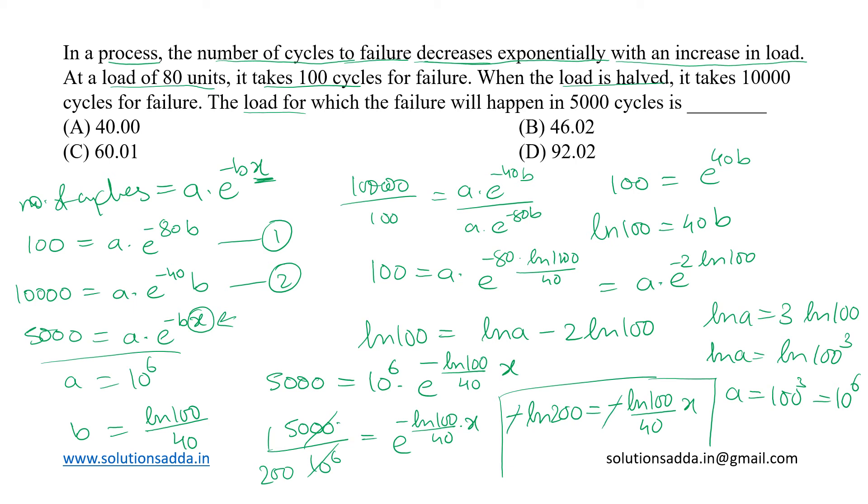Minus gets cancelled, and what we get is 40 ln 200 upon ln 100 as the value of x.